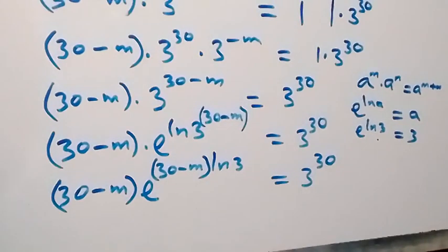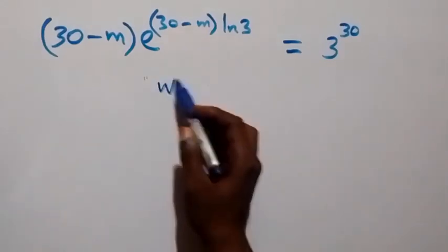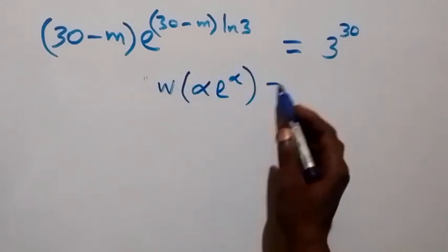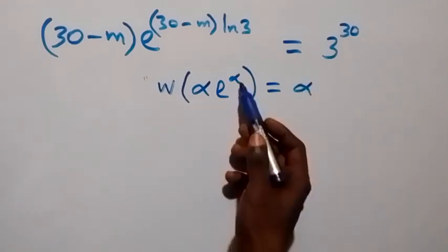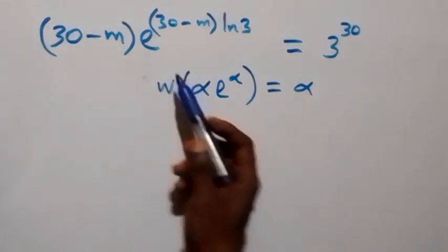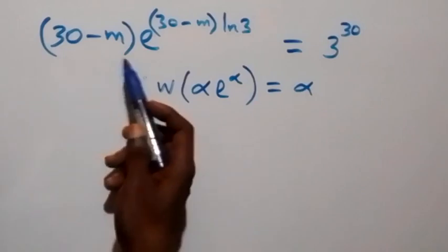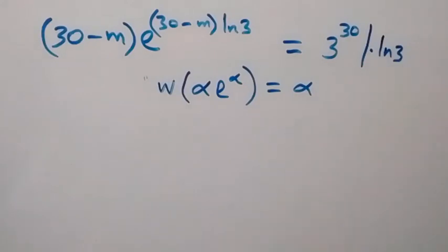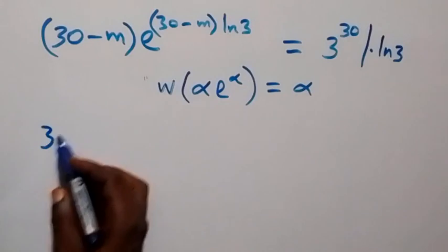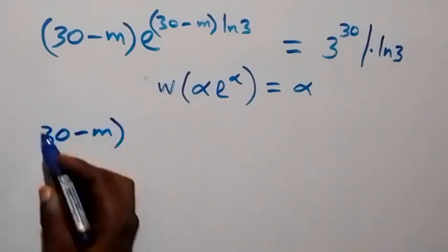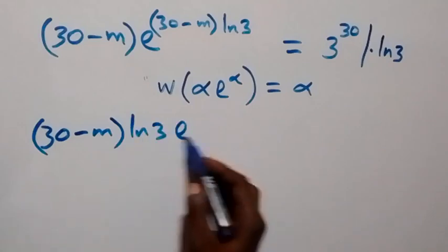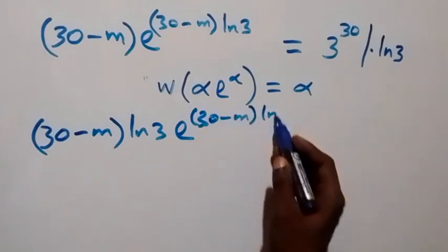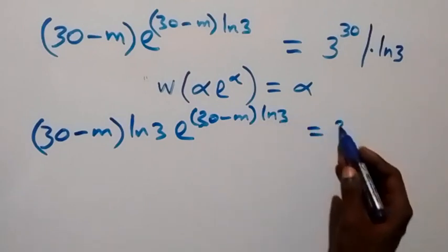From Lambert's W function, when we have W(alpha · e^alpha) this equals alpha, so the power and the coefficient need to be the same. The difference here is we have ln 3, so we multiply through by ln 3. This becomes (30 minus m) ln 3 times e raised to power (30 minus m) ln 3 equals 3 raised to power 30 times ln 3.